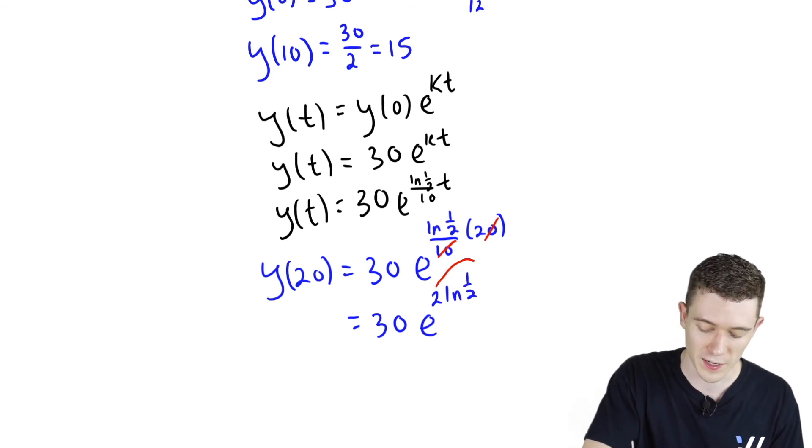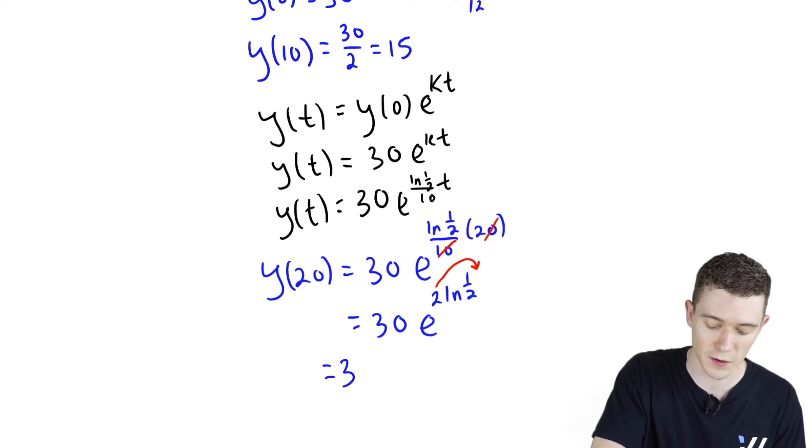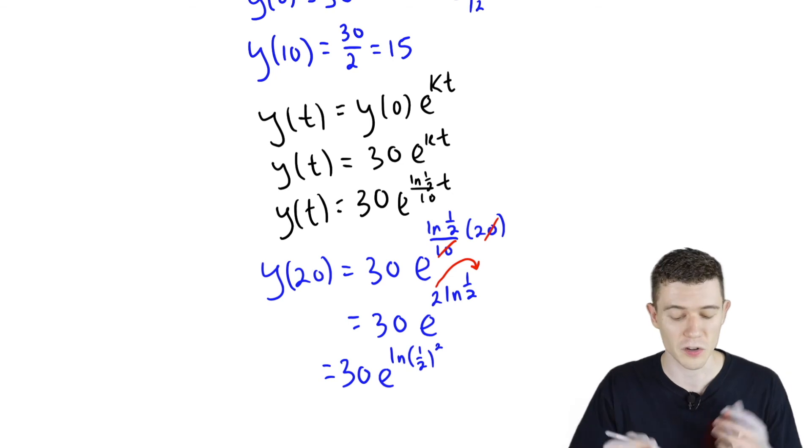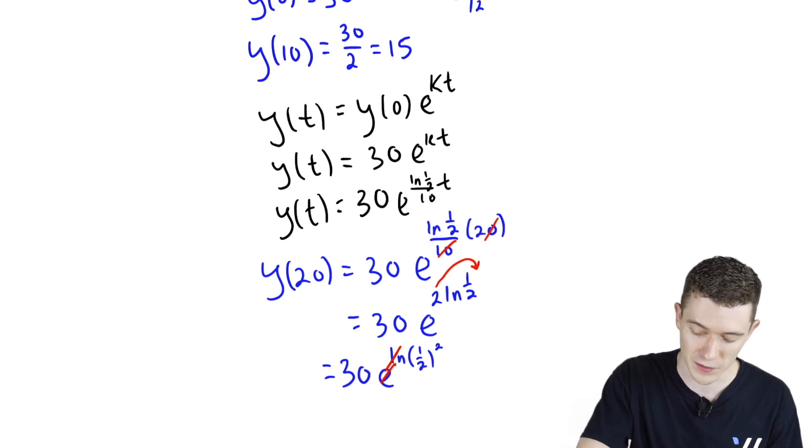We can write that coefficient as the exponent of the inside. This could say 30e^(ln(1/2)^2). And now e and ln can undo each other once more. We can cancel these.